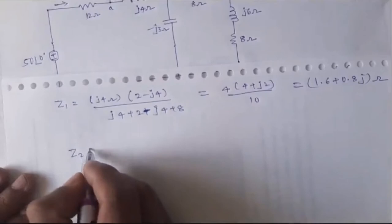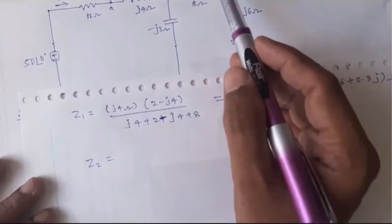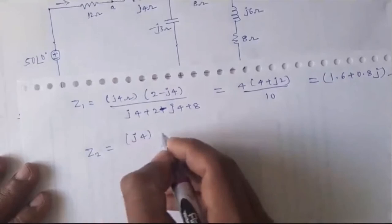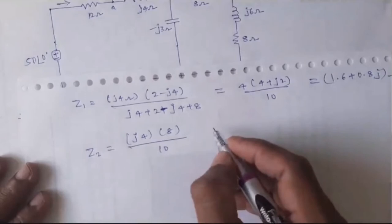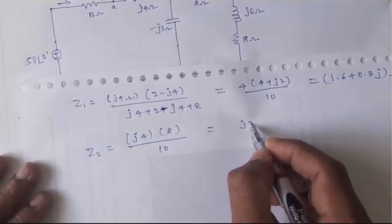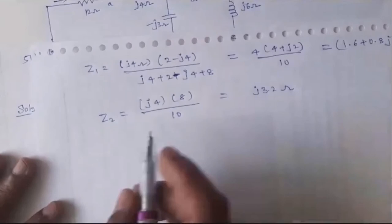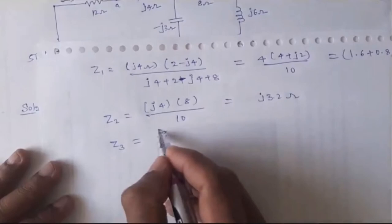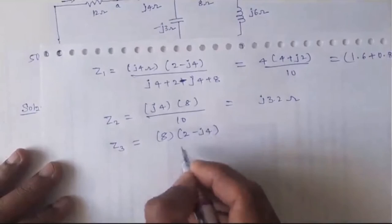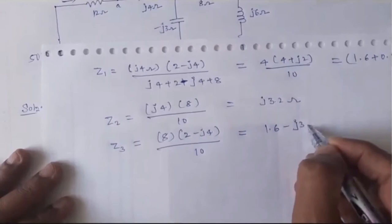Continuing the delta-to-Y conversion: Z3 equals 8 × (2 minus j4) divided by 10, which equals 1.6 minus j3.2 ohm. So using delta-to-Y conversion we have obtained Z1 equals 1.6 + j0.8, Z2 equals j3.2, and Z3 equals 1.6 minus j3.2 ohm.